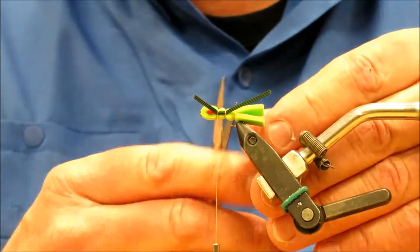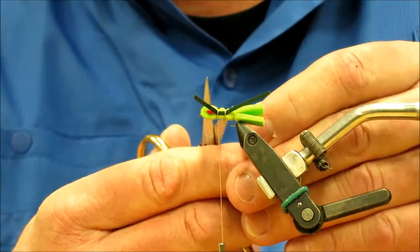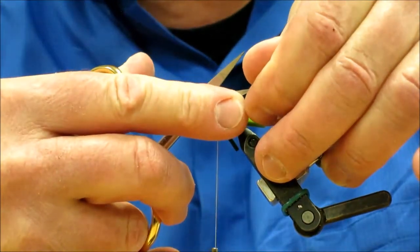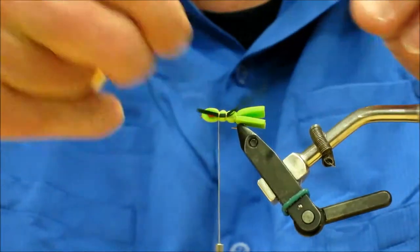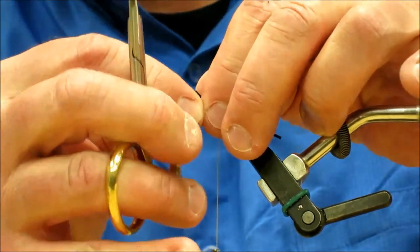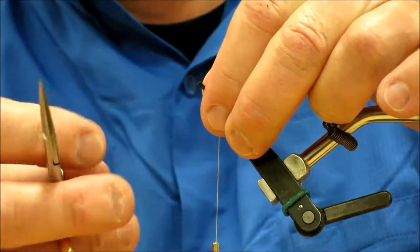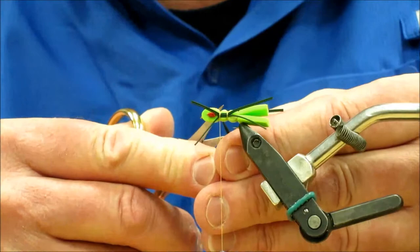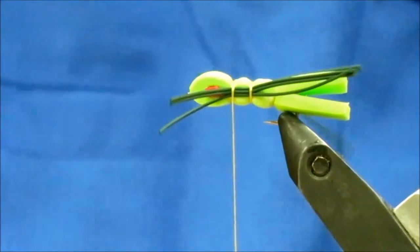Now you can do this part later if you want, but what you're going to do with these legs is split them with your bodkin or your scissors. Go between the two right up to the body. The reason I'm doing this is to get a little better wiggle out of the fly. Now you can put these on singly if you want to, if you prefer it that way. This is just another way of doing it. But you want to make sure that split goes all the way to the body so that they're really going to wiggle around for you.